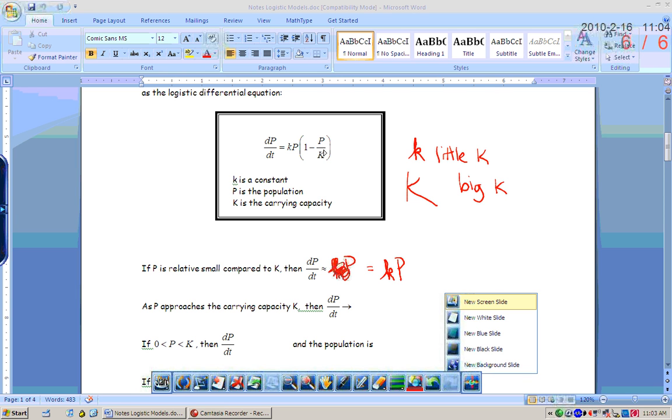As p approaches the carrying capacity, so capital K is your carrying capacity, as your population approaches the carrying capacity, then what will dp/dt equal? Zero, or it will approach zero. So as your population approaches your carrying capacity, p over big K is approaching one, then you have one minus one or zero, then the rate of change of the population is zero. So the change in population will be zero, or at least very, very small.